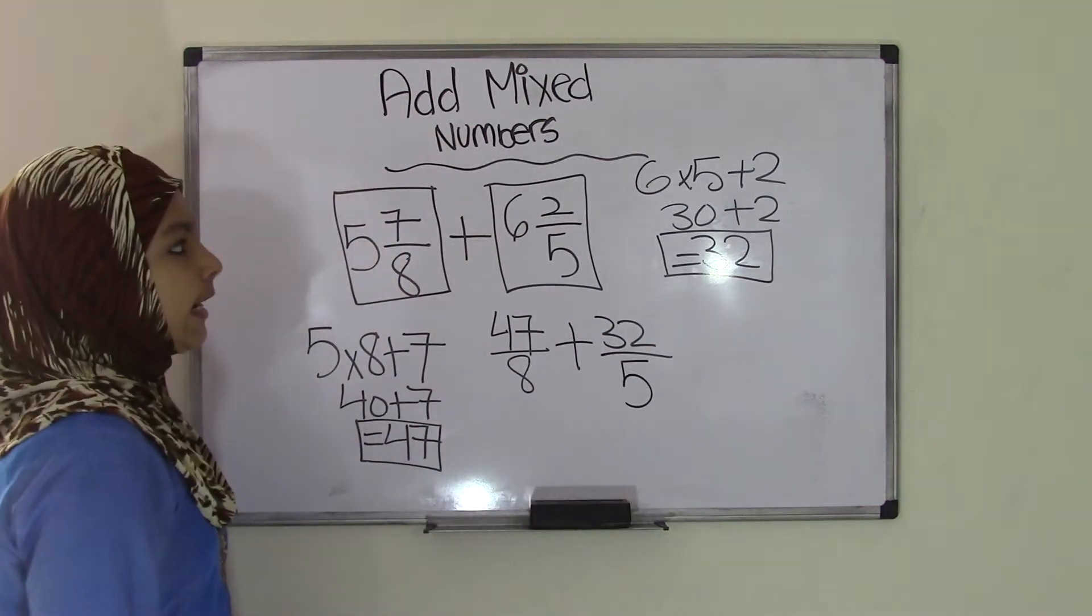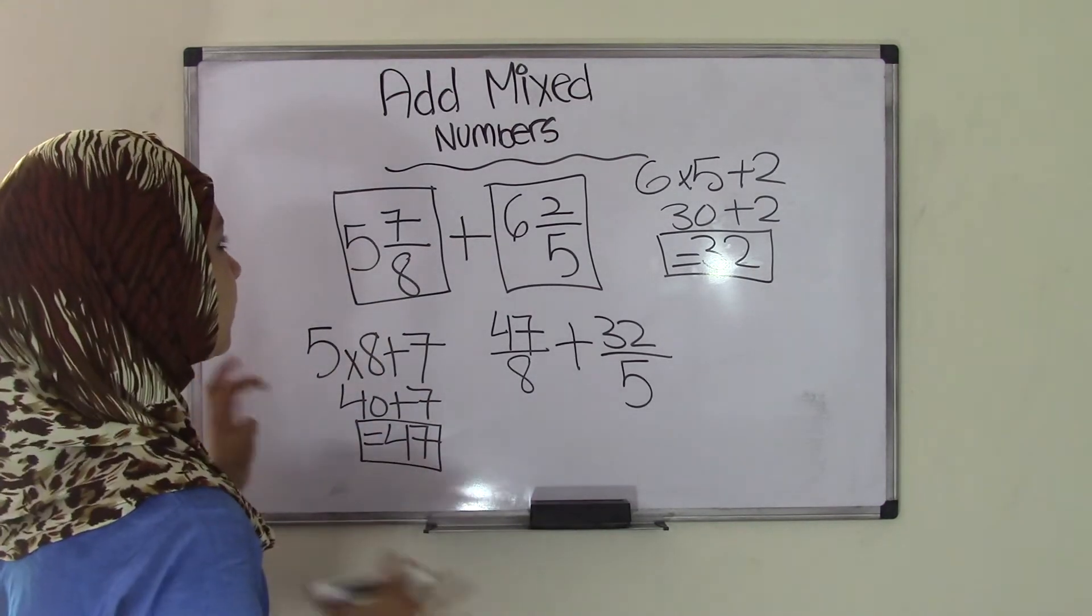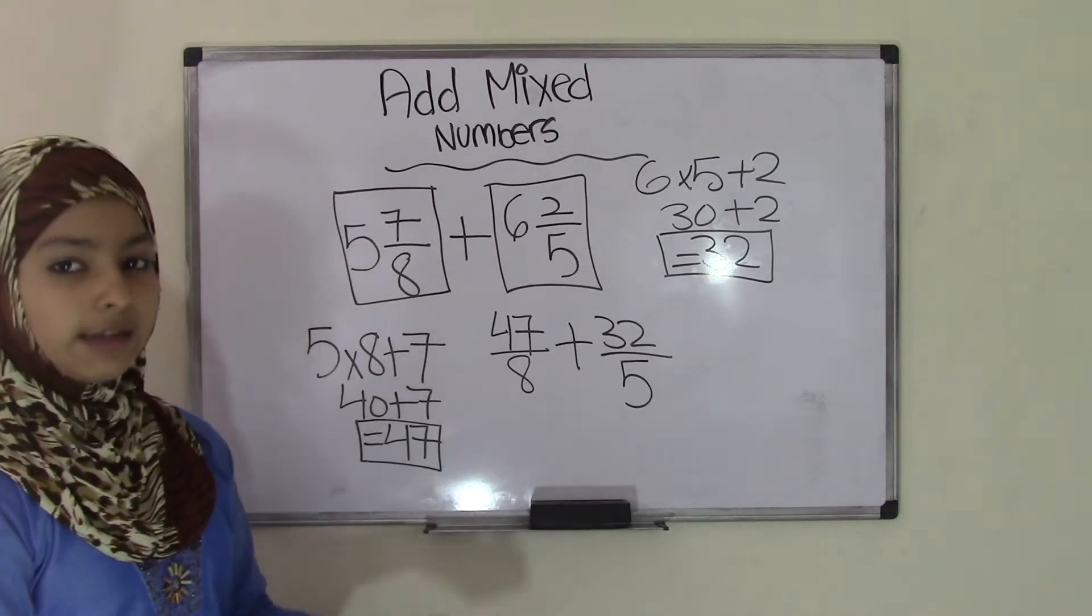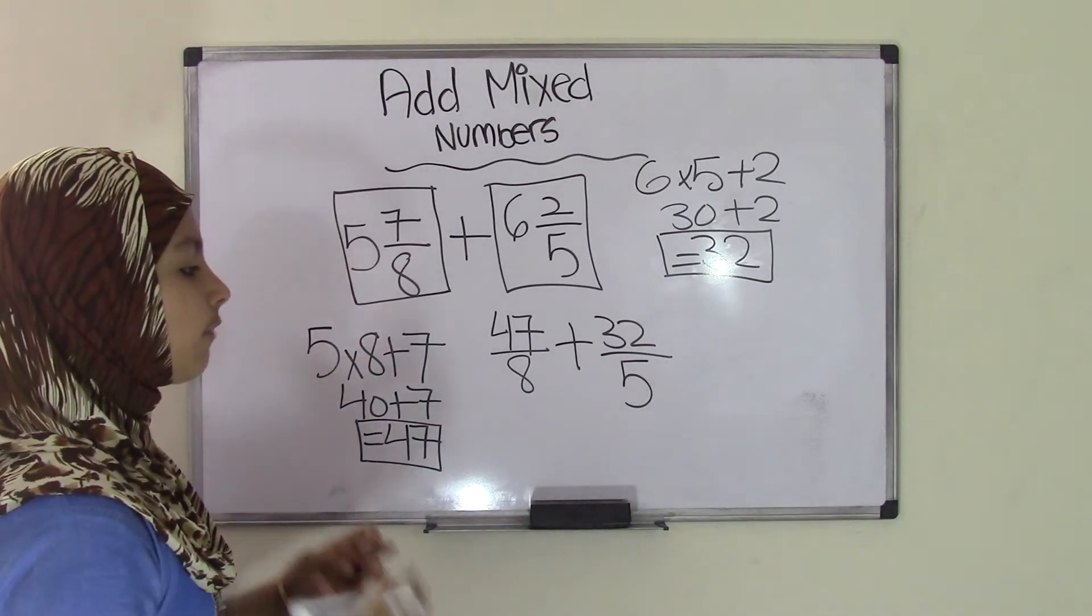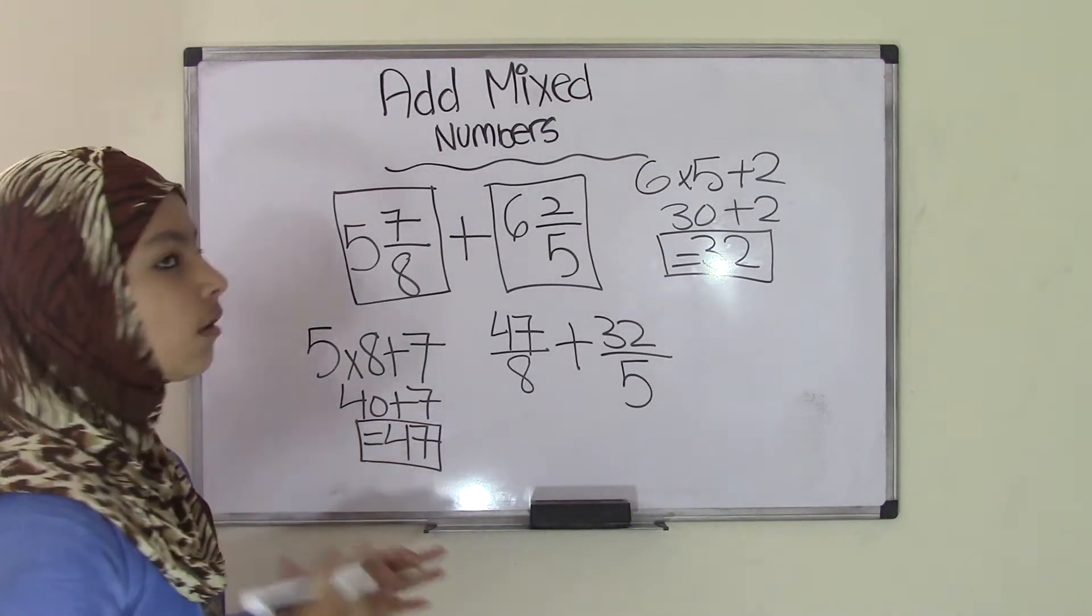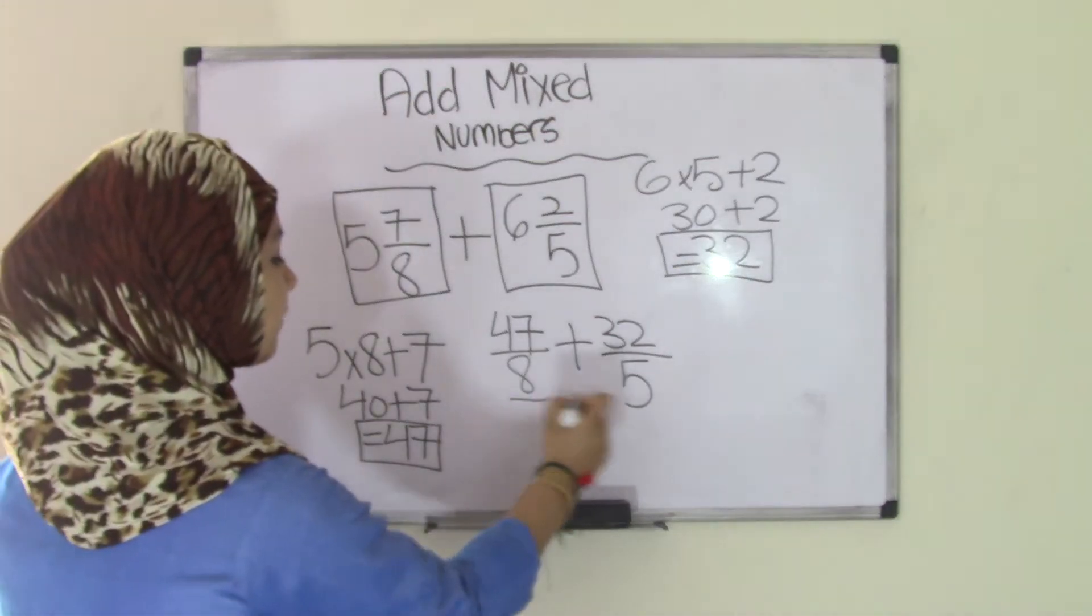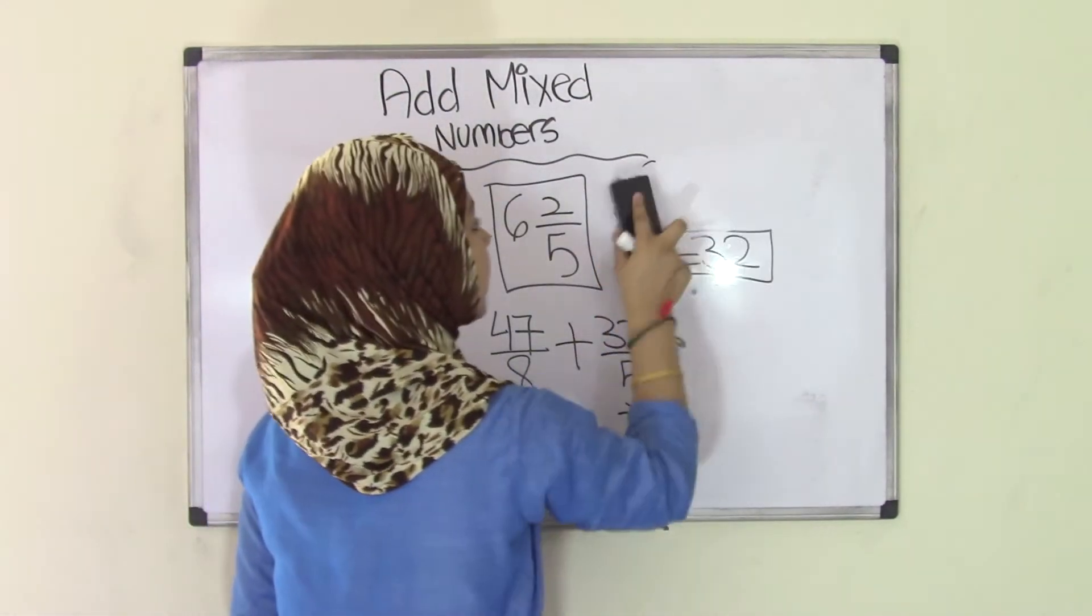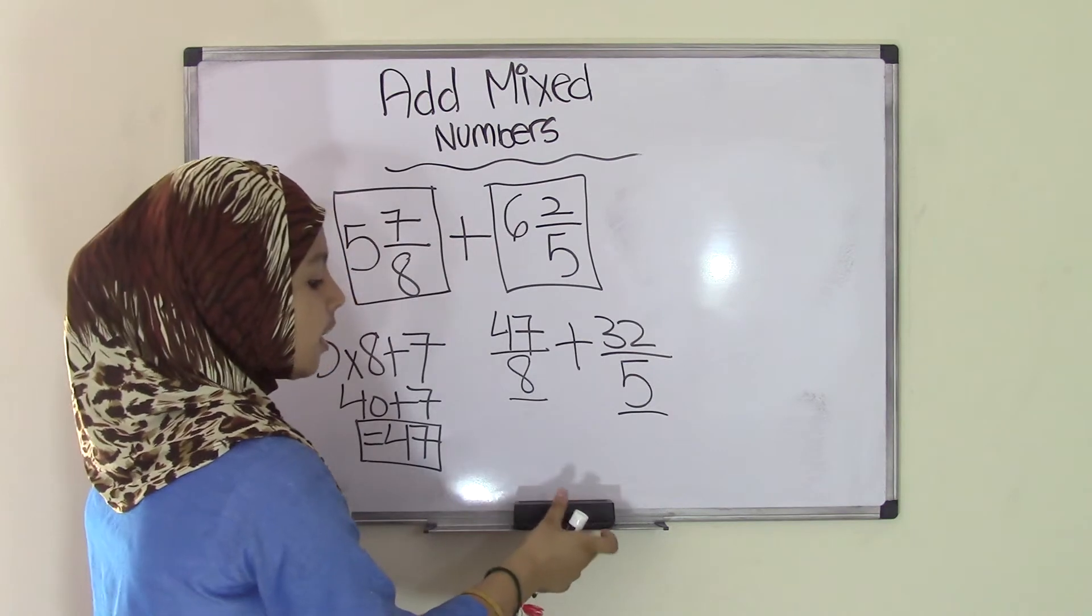Now, in our previous videos, this was way back, not beginning of this chapter, but in our last chapter, we talked about common denominators. And when adding or subtracting fractions, you always, always, always have to have common denominators. As you can see, 8 and 5 are not common denominators, are they? So let's revise that topic of getting common denominators.